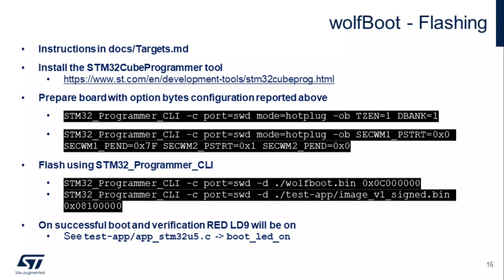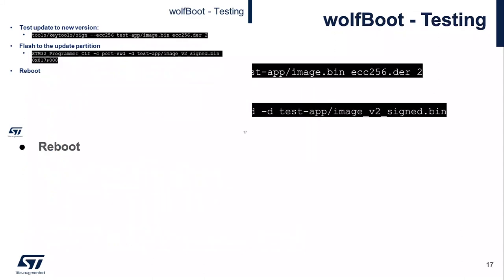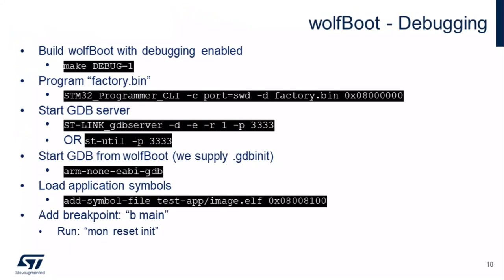On a successful boot with this board, you'll get boot LED number nine — the red one will be turned on. If you want to do a test, you can sign that same firmware with a version two. The last argument is the version number, which is a 32-bit value. WolfBoot looks for a newer version to install, so if you sign with a newer version, it'll try to update, and you can flash and reboot to verify that it uses the updated firmware.